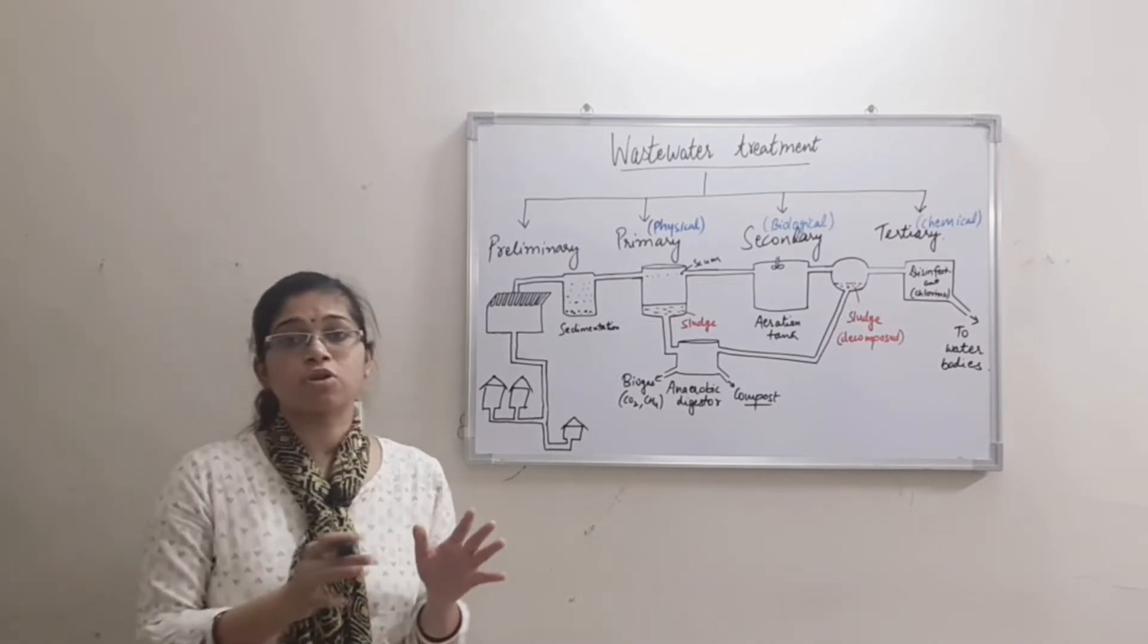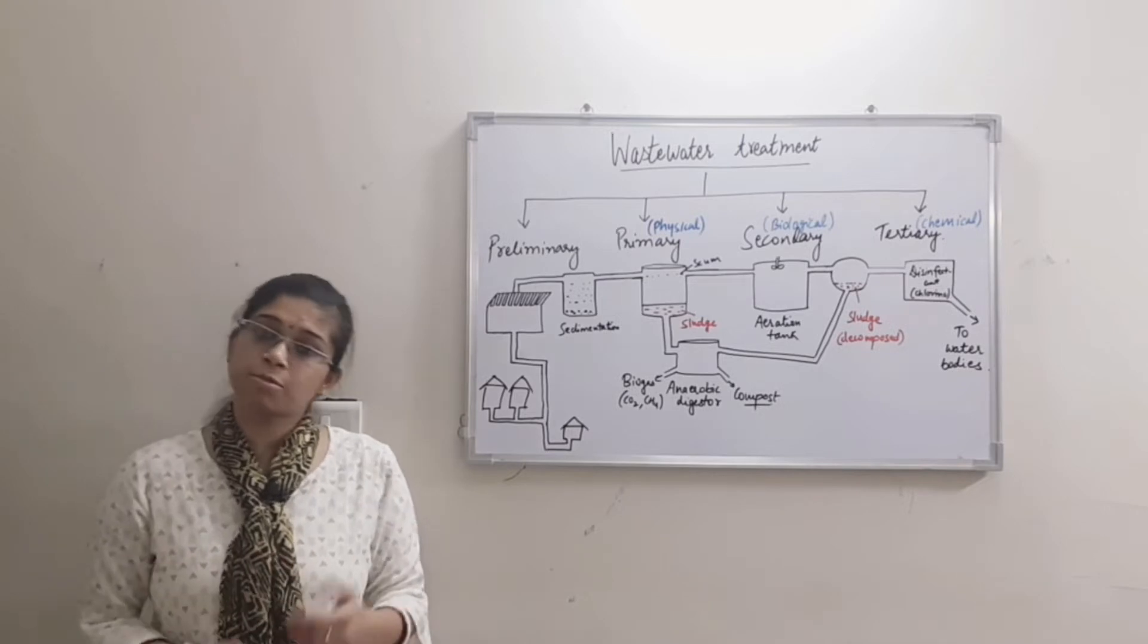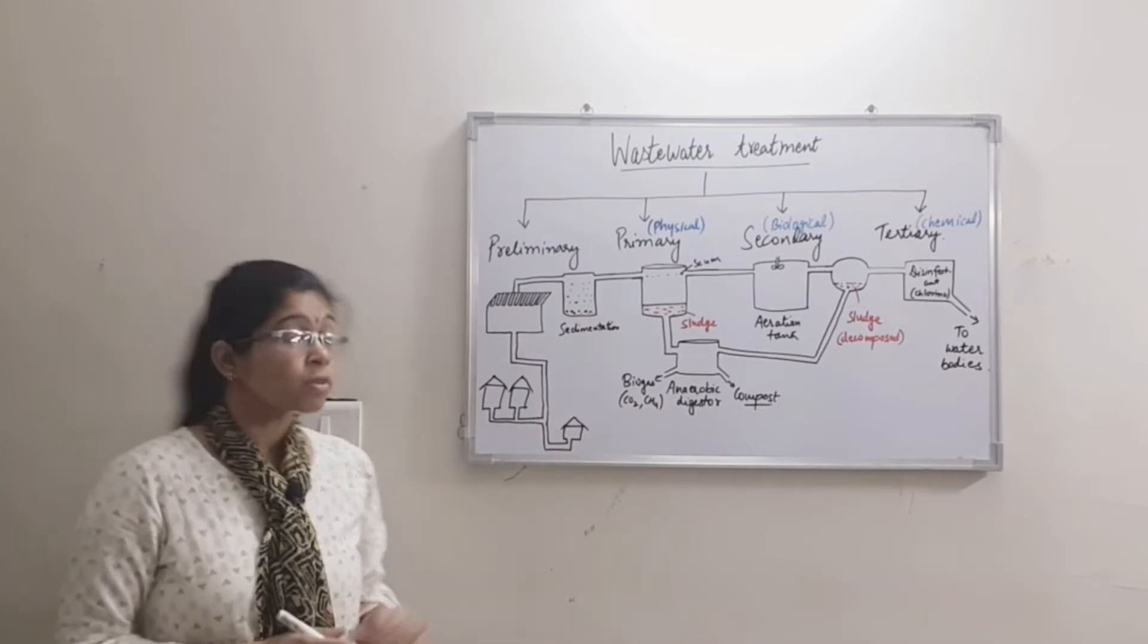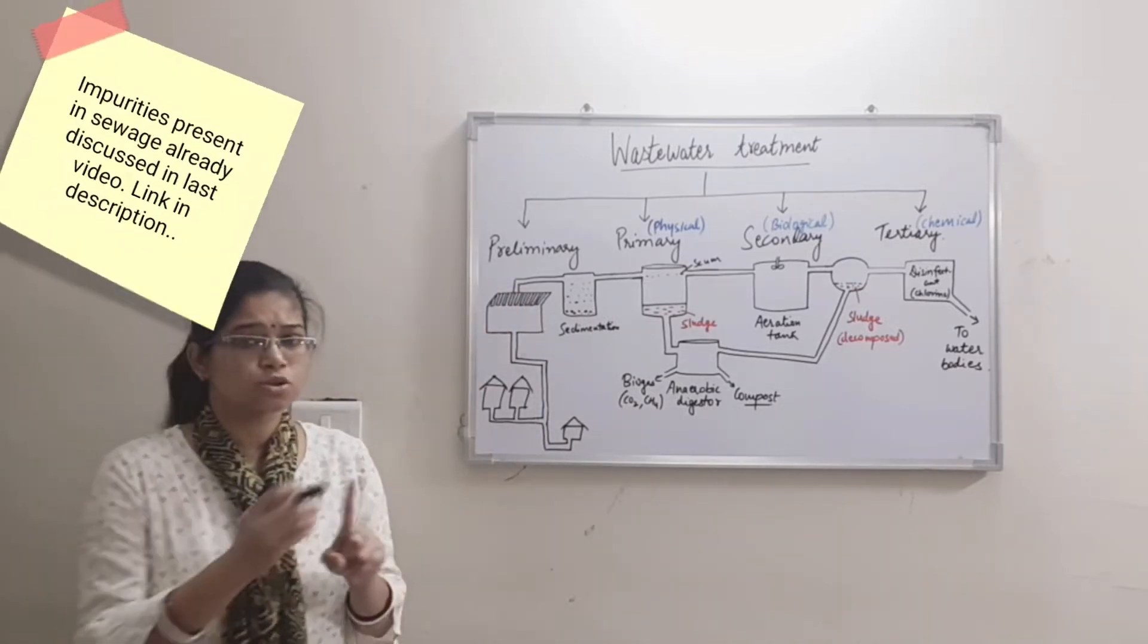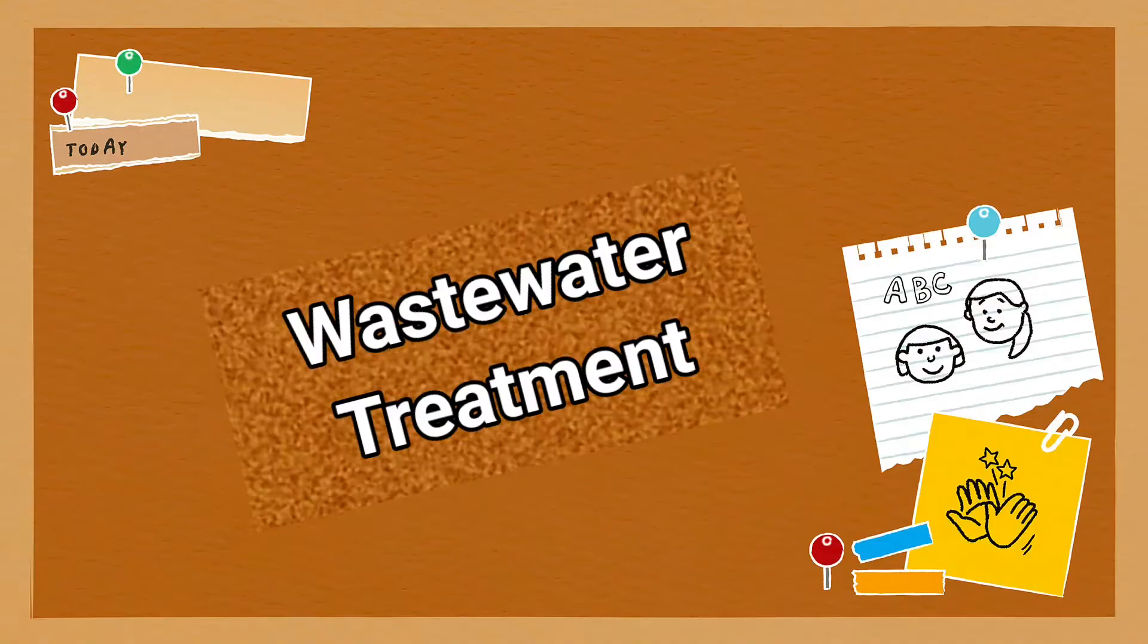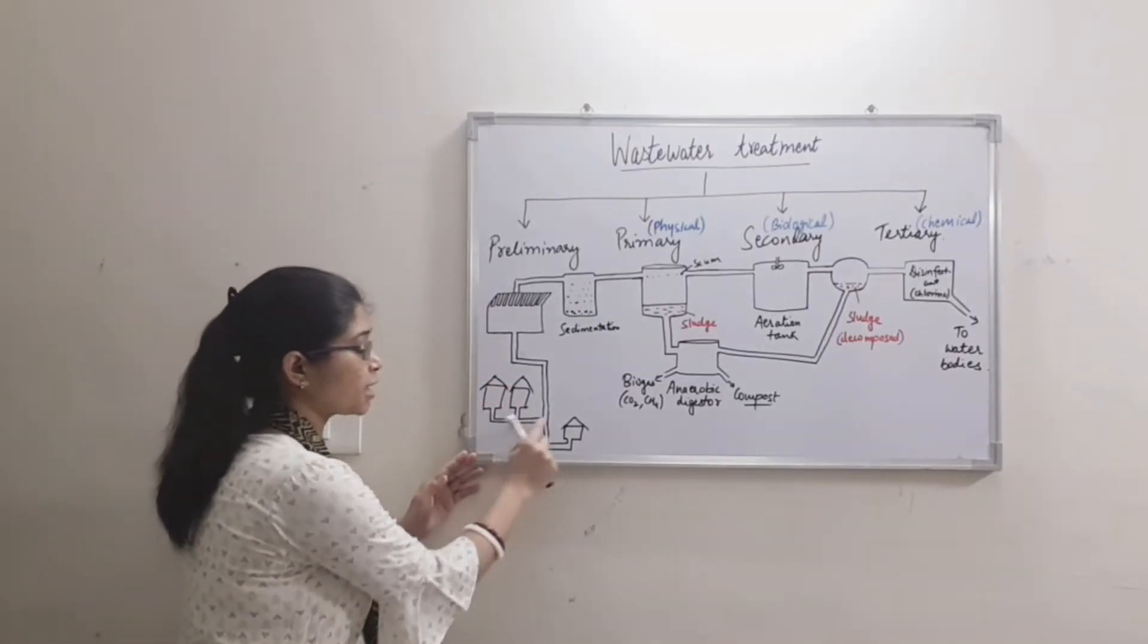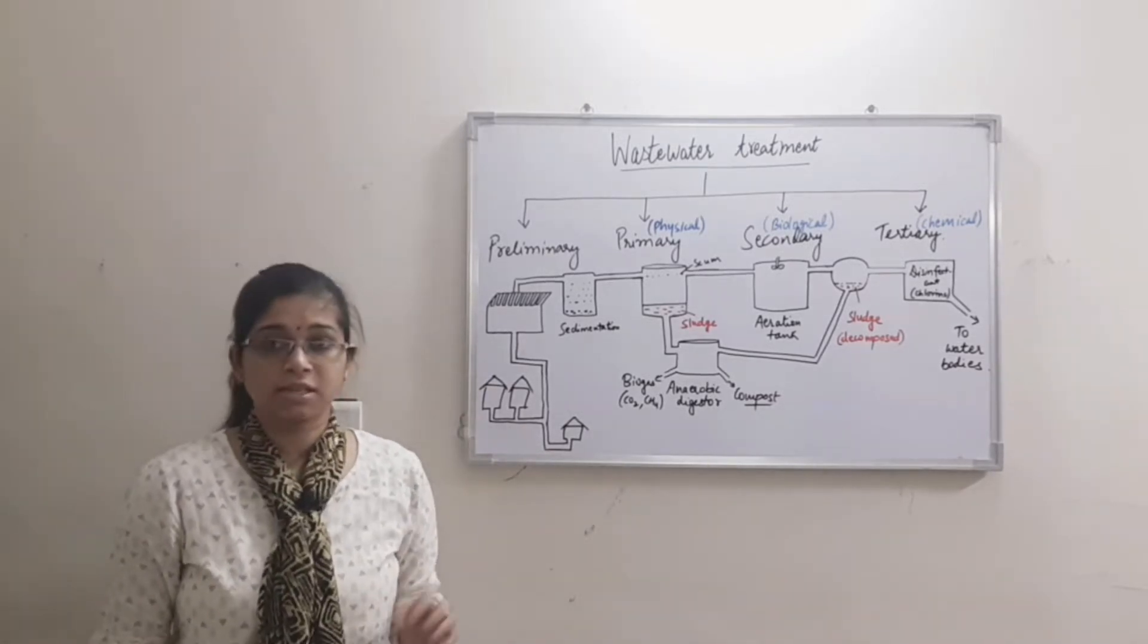This is why we treat this waste water. All the main waste is removed in the waste water treatment plant. This sewage from our homes travels through pipelines called sewer pipelines or sewers.